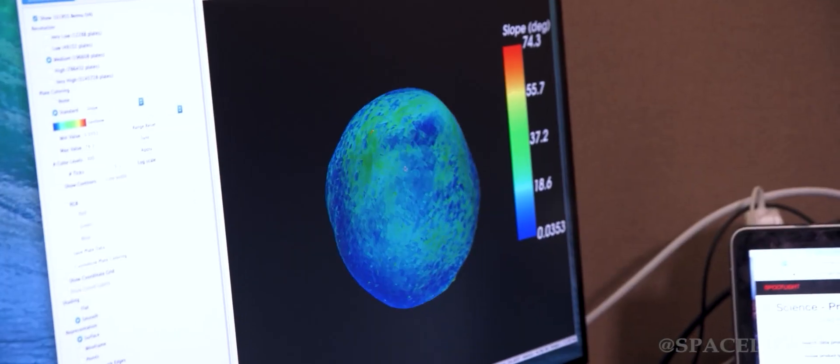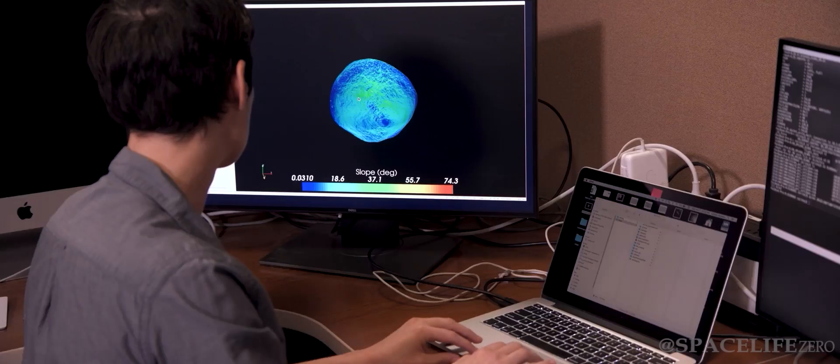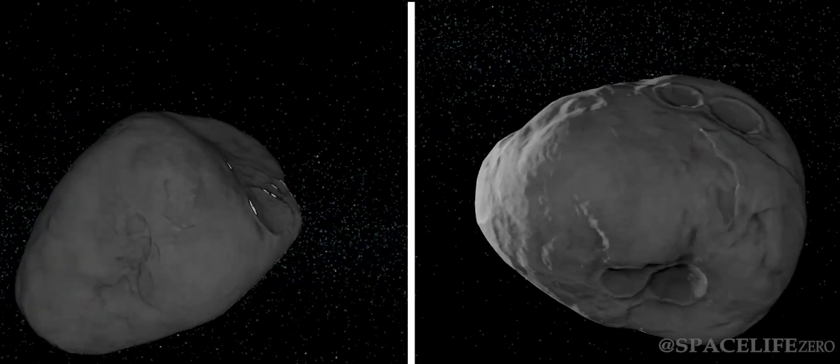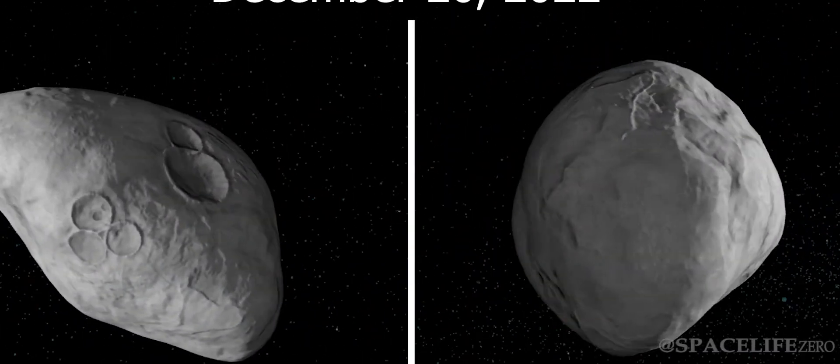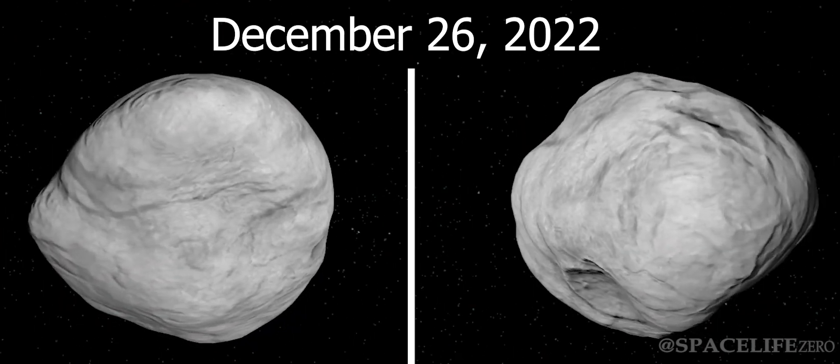As per the information received from NASA's JPL at California Institute of Technology, two asteroids will approach close to the surface of Earth on December 26, 2022.